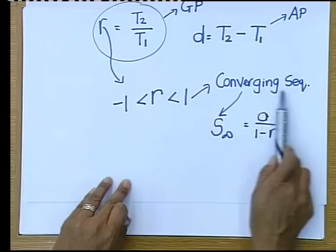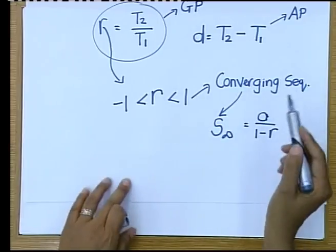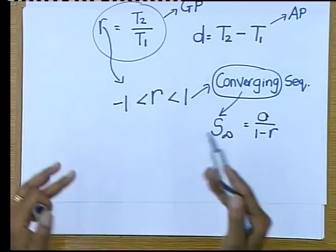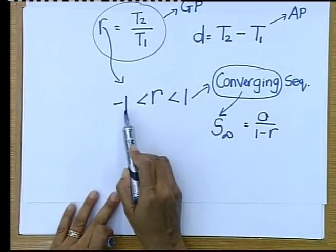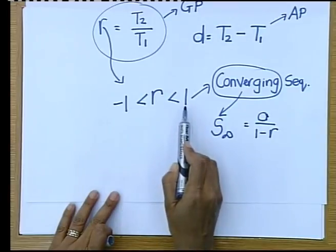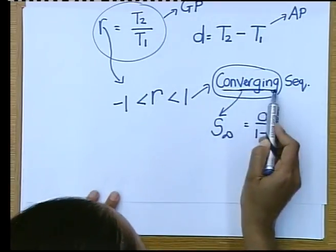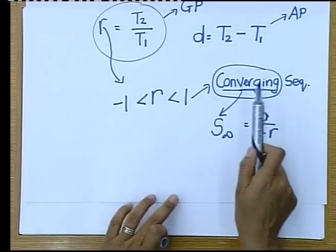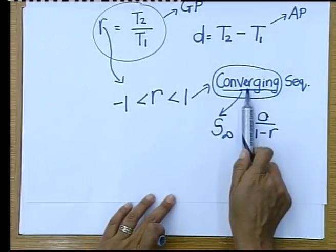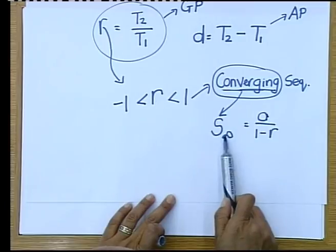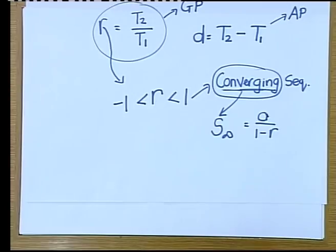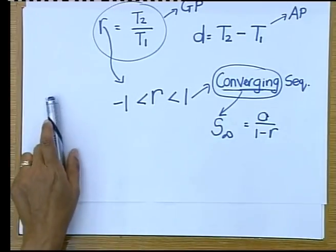Remember converging sequence. I tell my matrics, if you see the word converging, you immediately write down R is between -1 and 1. When you see that word, R is between -1 and 1. And you know, in that question where you see the word converging, they're going to ask you to work out the sum to infinity. Go to your formula. And it's A/(1-R).